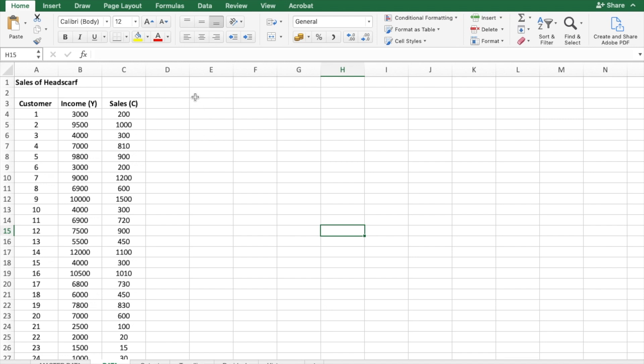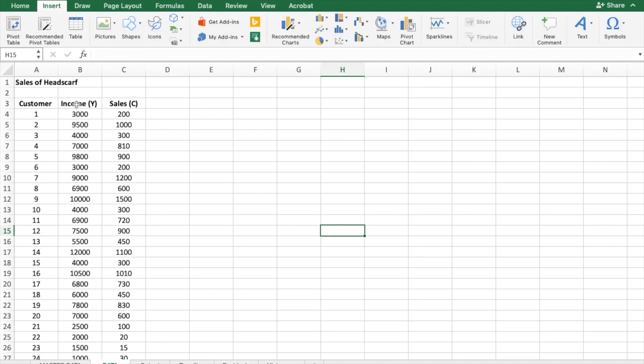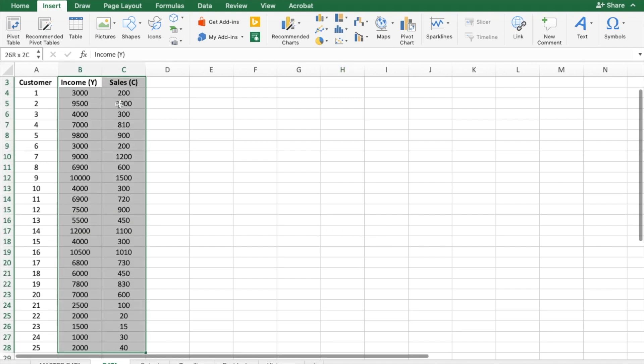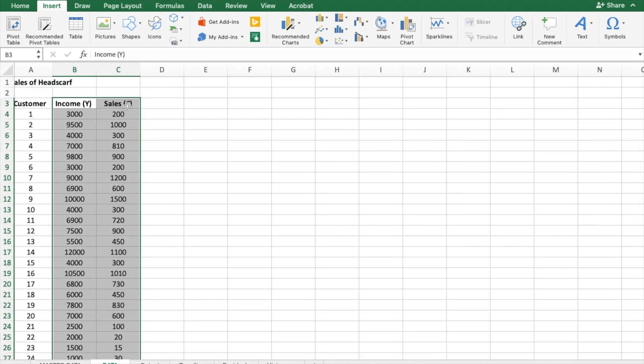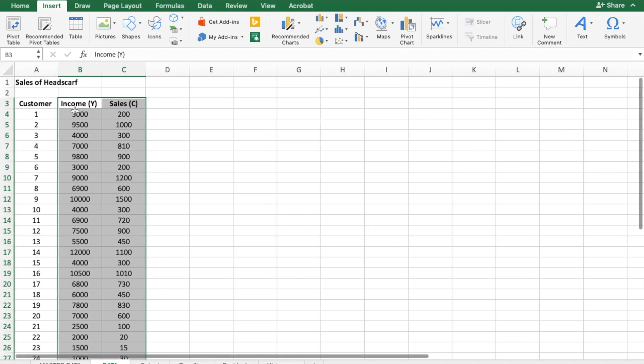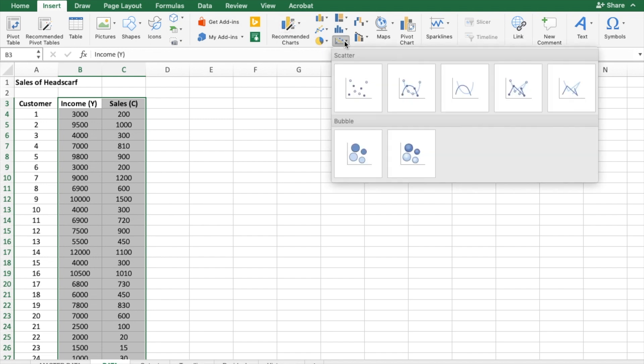To get a scatter plot, what you need to do is you go to insert, and what you do, you select your data, both of the data here, which is income and sales. So in this case, my sales is a dependent variable, and my independent variable here is income. What I do, from insert here, I will go to this icon where I can see a scatter plot. I will click over here in the drop down menu, I will select scatter plot.